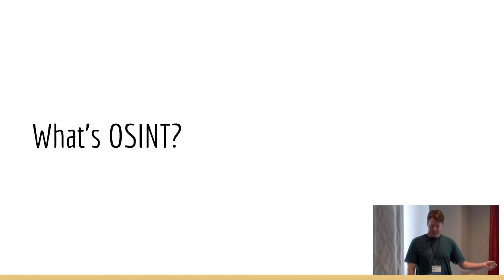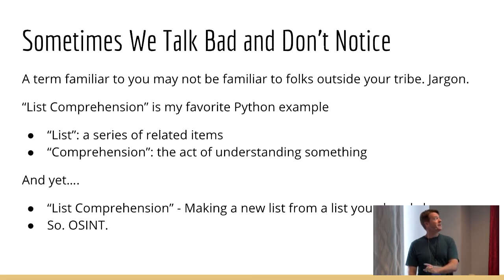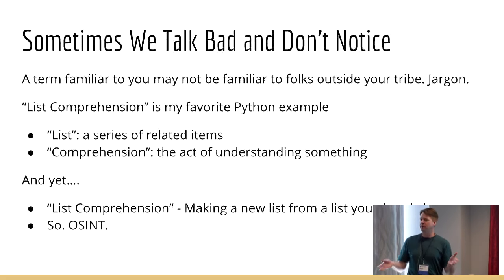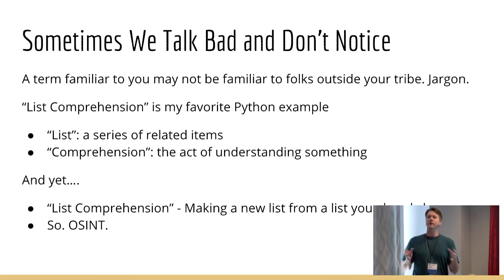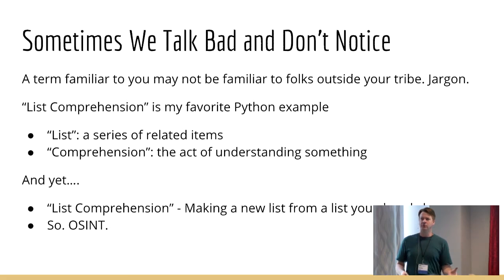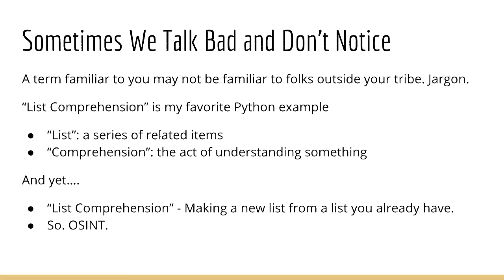OSINT is open source intelligence. I want to get back to the jargon thing first. When I first came to Python, my last scripting language before Python was Perl. There's a lot of jargon in the Python community and in other languages — every language has their own jargon. The one that always jumped out at me was this list comprehension thing, because it comes up all the time when you're talking about writing Python beyond beginner level. The phrase has nothing to do with its component words. Somebody off the street, you say 'I'm going to use list comprehension,' and they're going to say you're going to try to understand that list. So OSINT is my list comprehension.